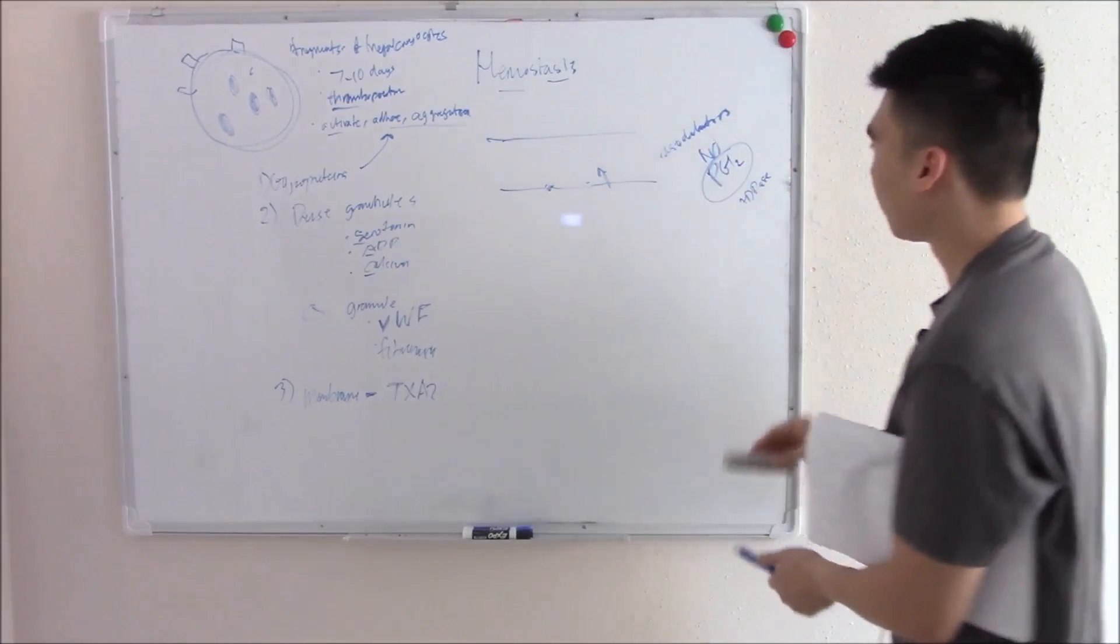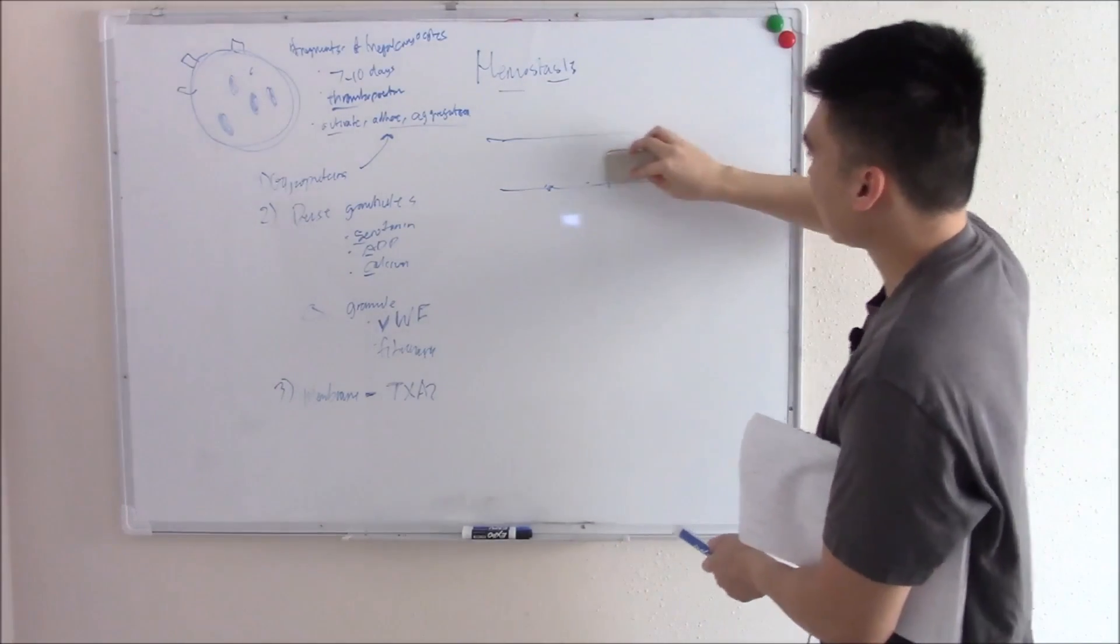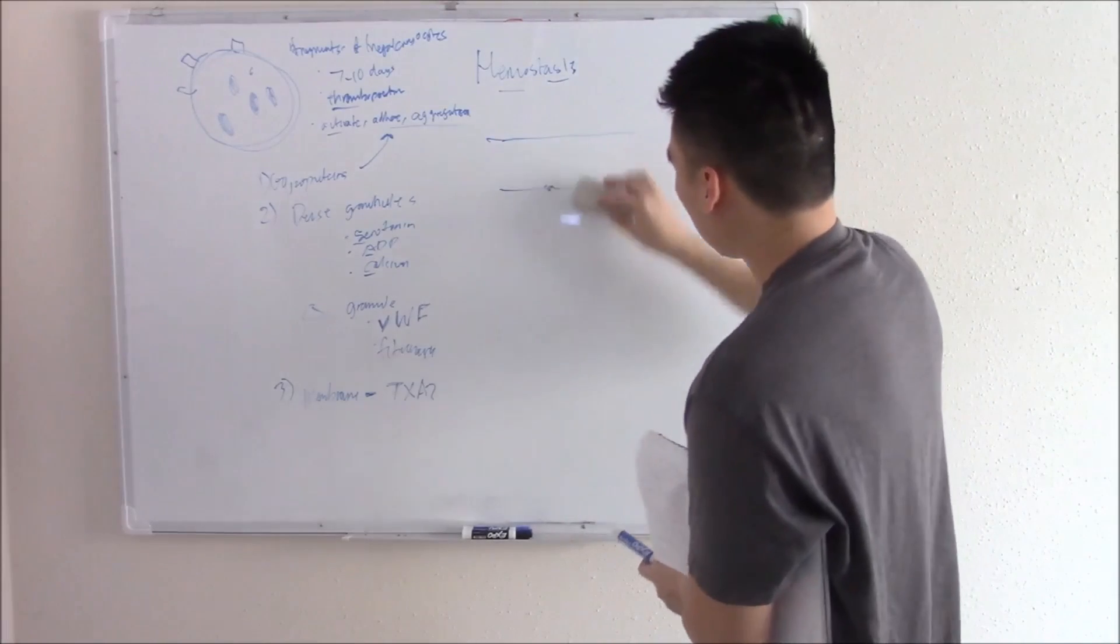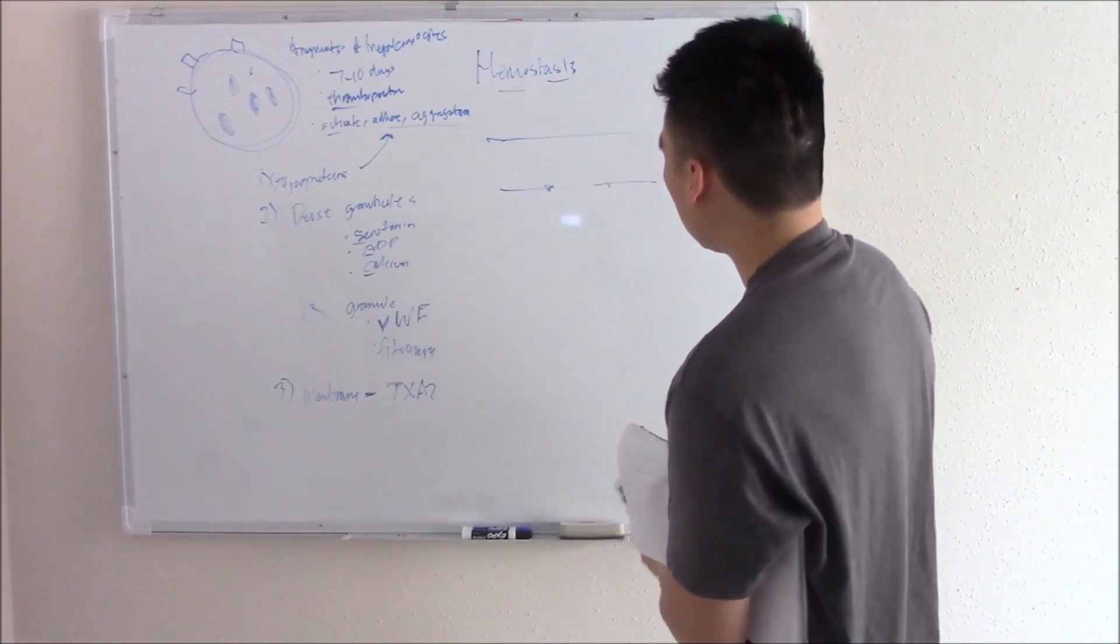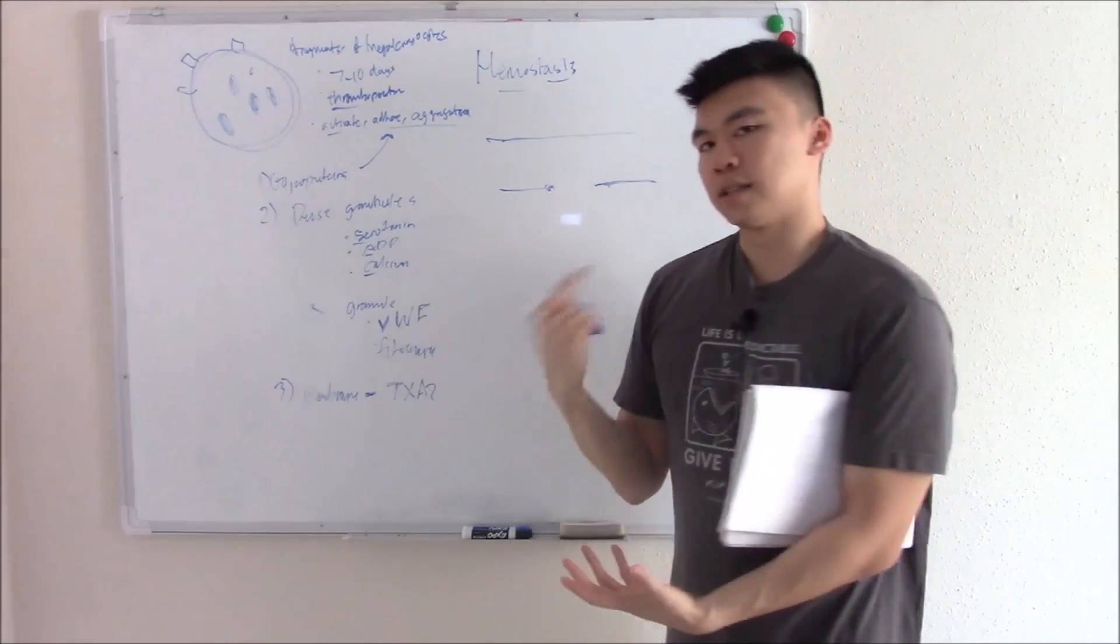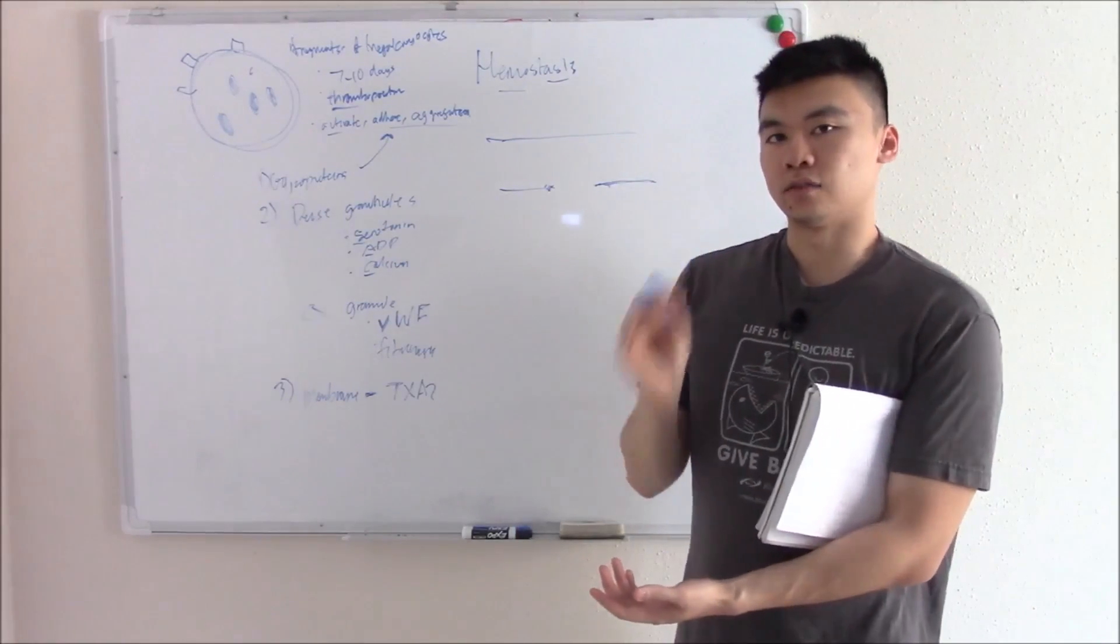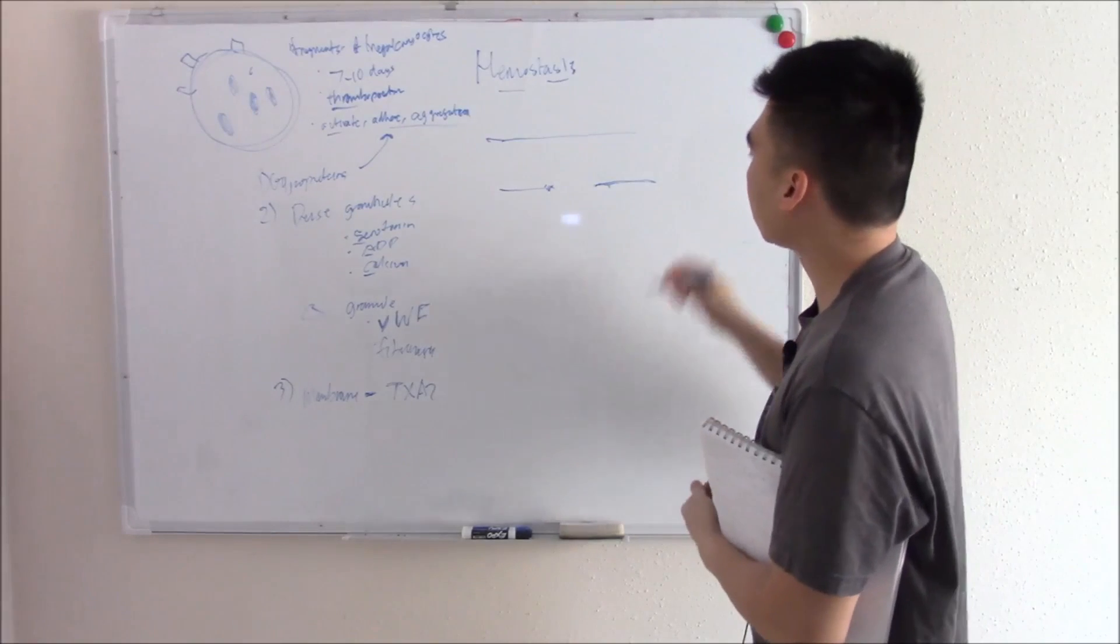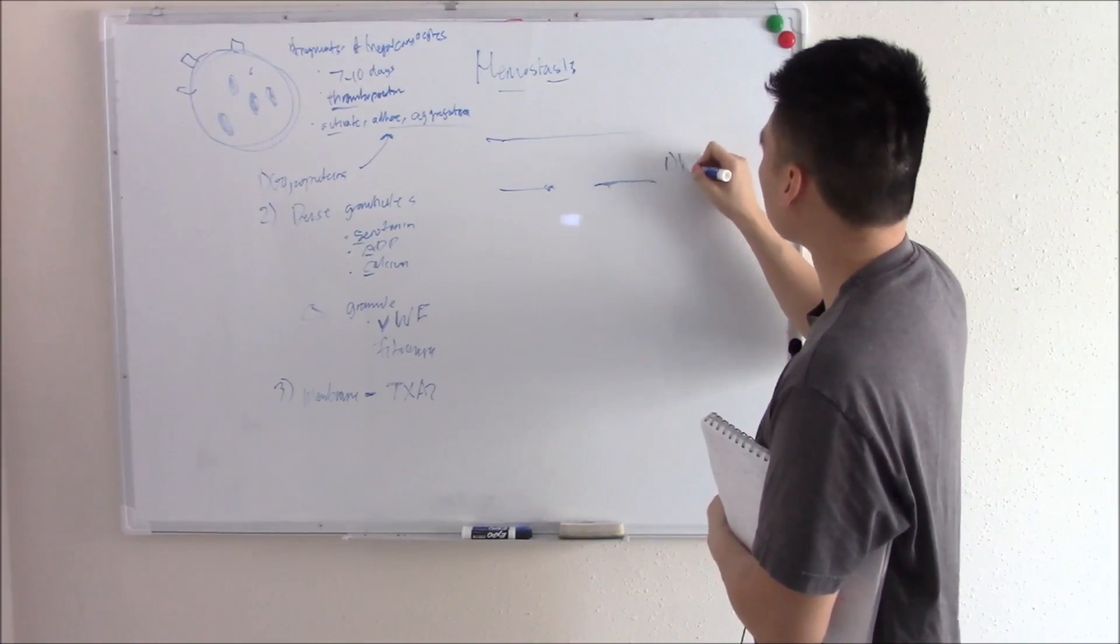However, if you don't have intact endothelium, if you get a cut and that endothelium breaks, then those factors decrease and it'll signal your body that it needs to form a clot. The first way it does that is by causing vasoconstriction. That is the first step.